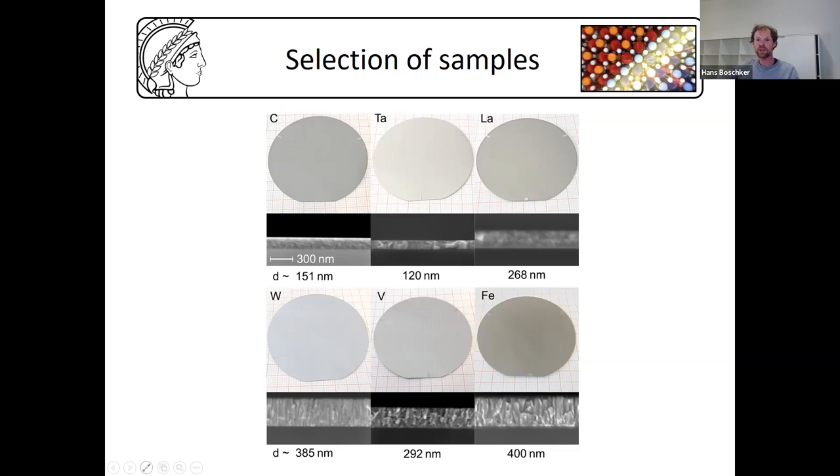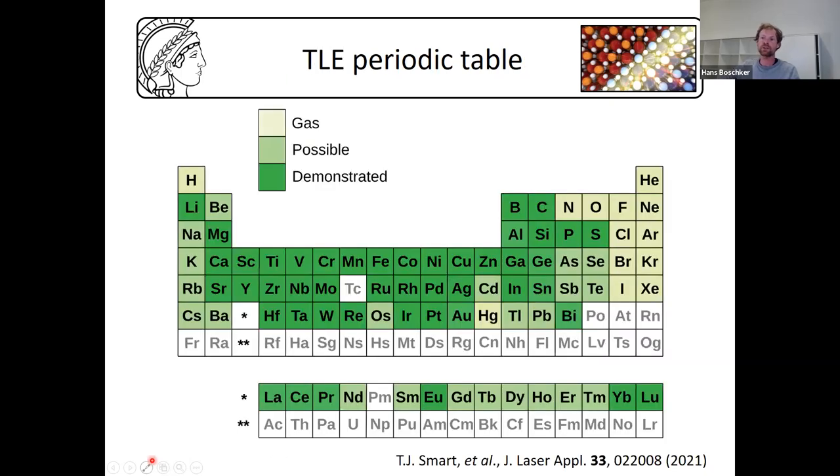This brings me to a summary of this first part. This is the periodic table as of a few weeks ago. We have achieved successful deposition of all elements we've tried so far. We've tried about two thirds of the relevant elements for evaporation. Moreover, we tried all extremes in parameter space—high vapor pressure, low vapor pressure, high thermal conduction, low thermal conduction, etc. Therefore we are very confident that the remaining ones can be grown by TLE as well.